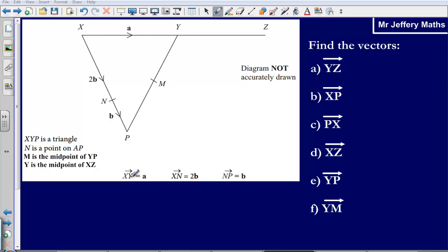We're also told that the vector XY is a, so from this point to this point is being described as a. The vector XN is 2b, and NP is being described as b.